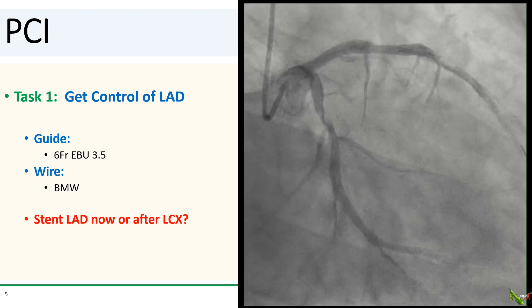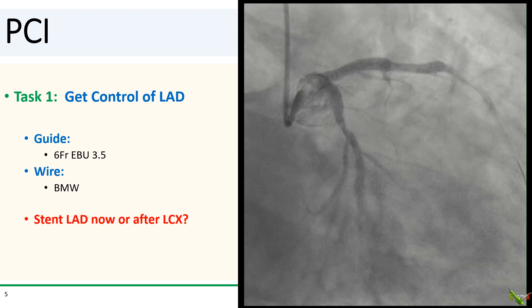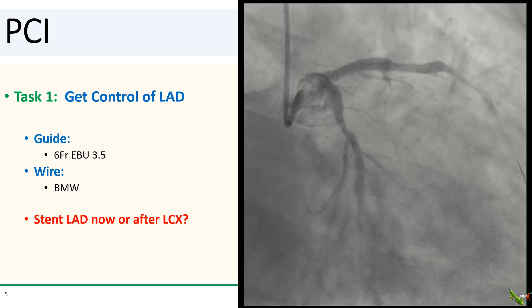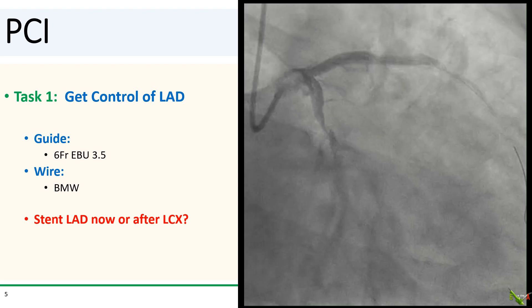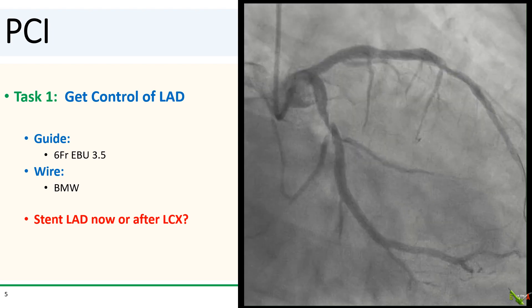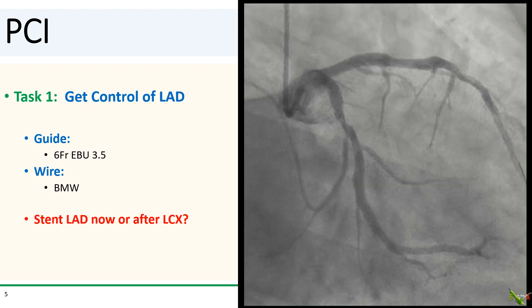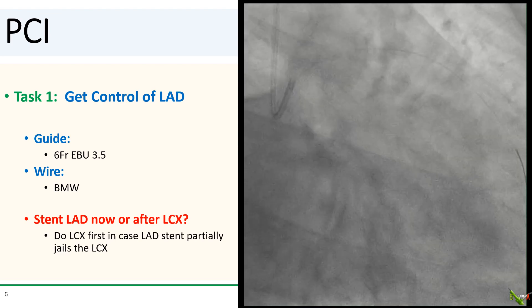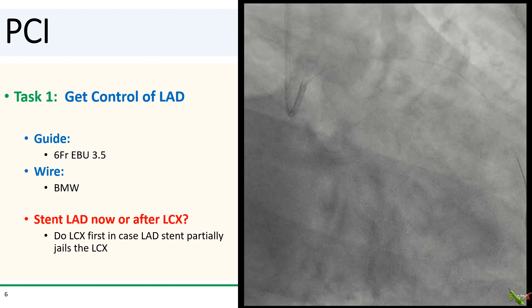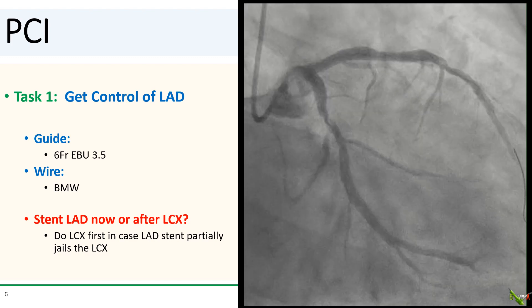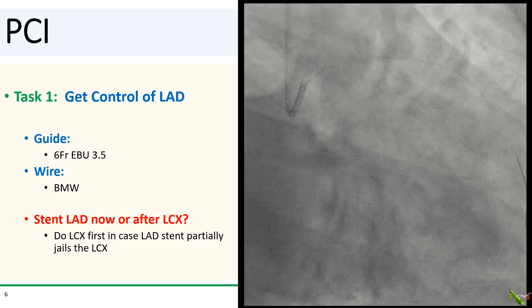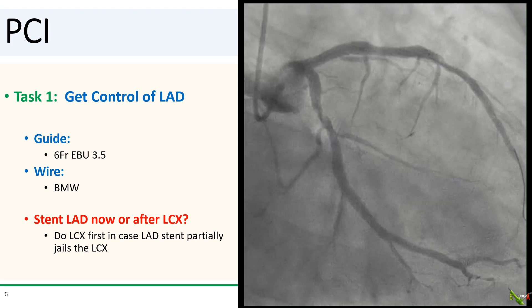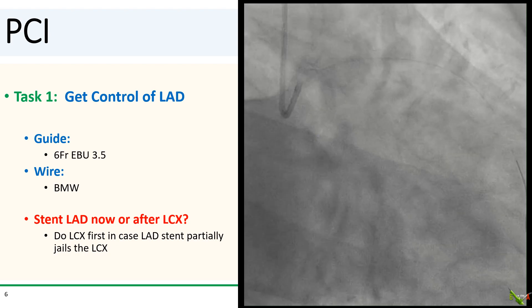Our first task was to get wire access to the LAD before the dissection started to extend. Fortunately, this was fairly straightforward and we got the BMW wire uneventfully down to the distal LAD. With the wire in the LAD, we decided to go after the circumflex first, as the dissection in the LAD is so proximal that a stent there would partially jail the circ, making PCI of the circ more challenging.